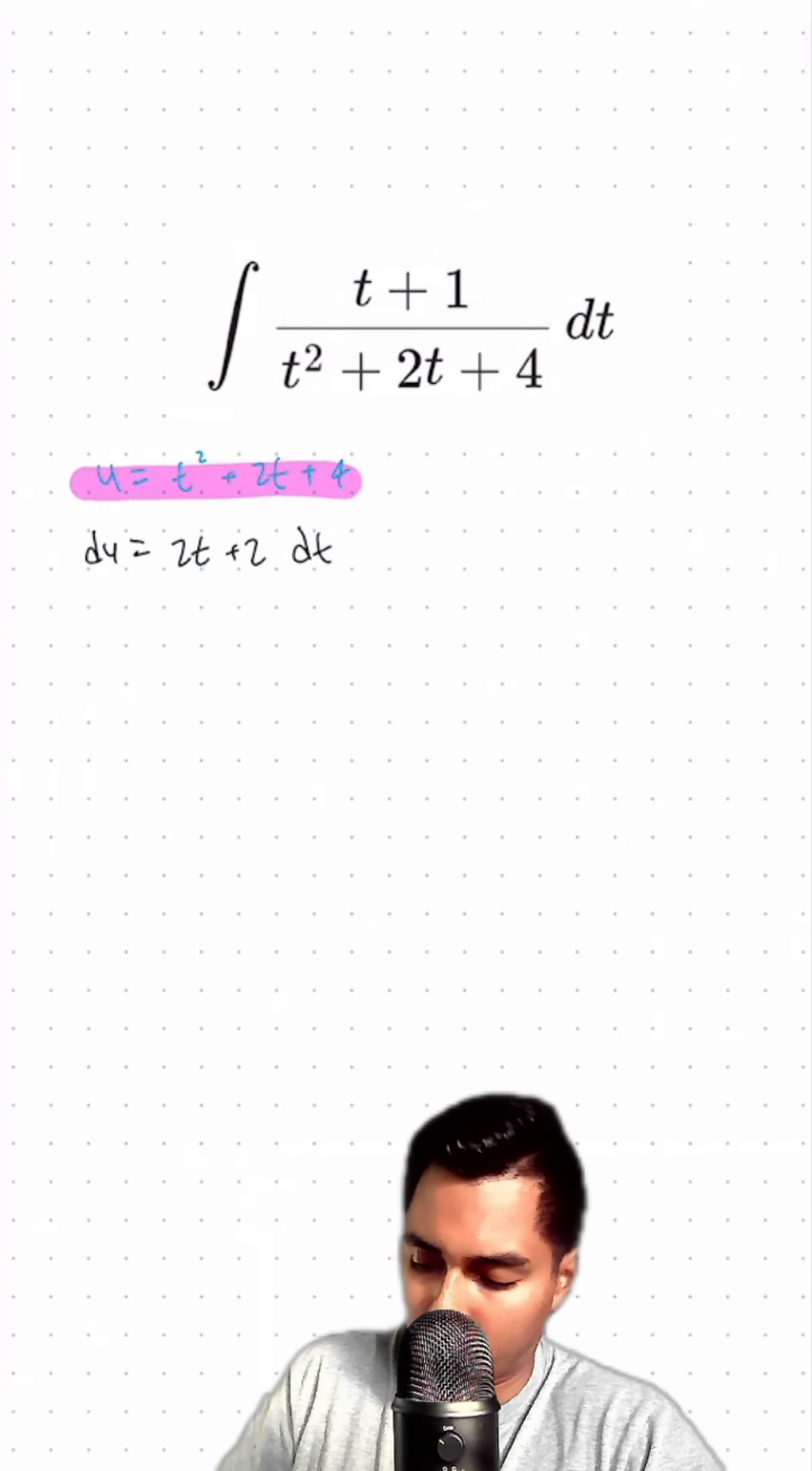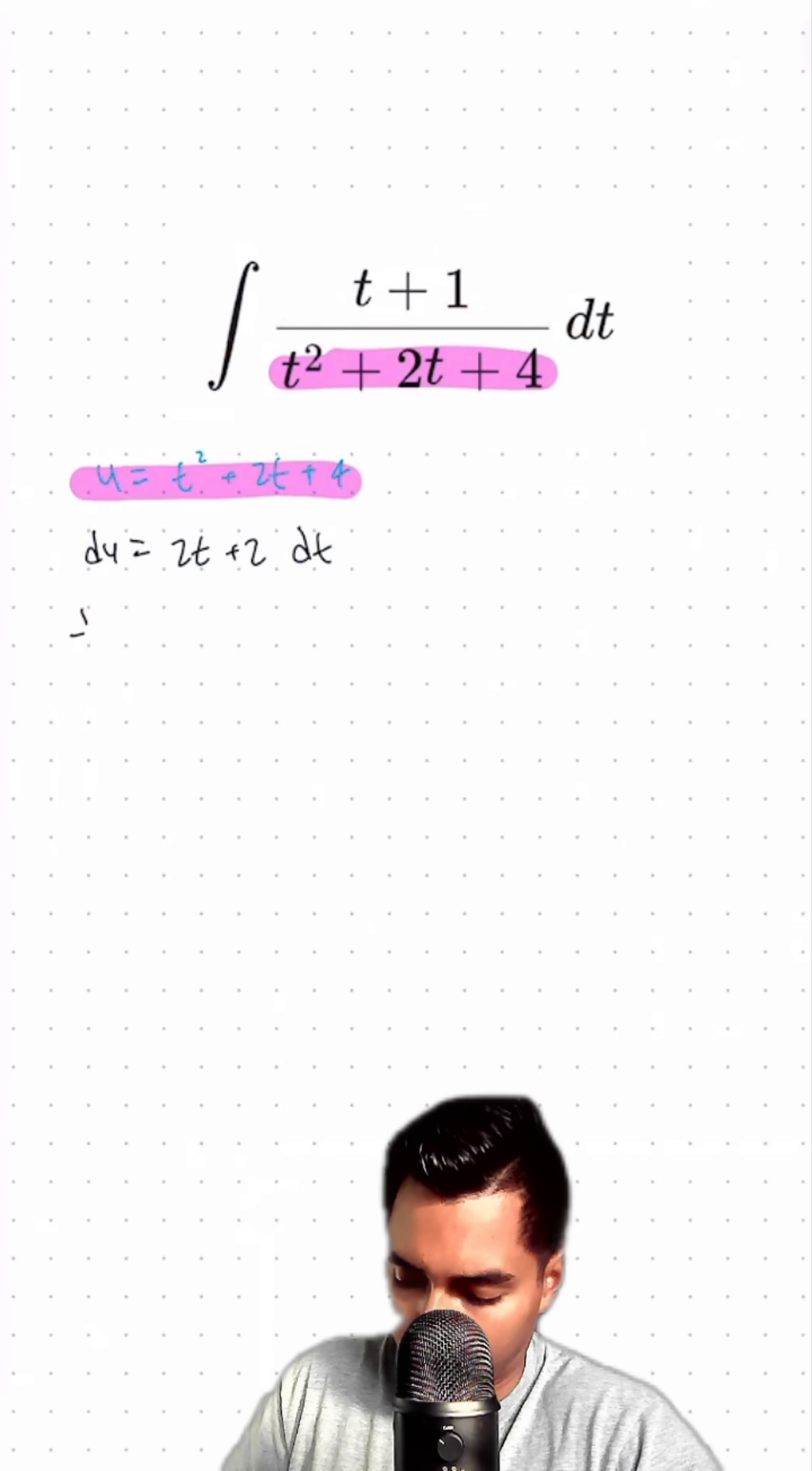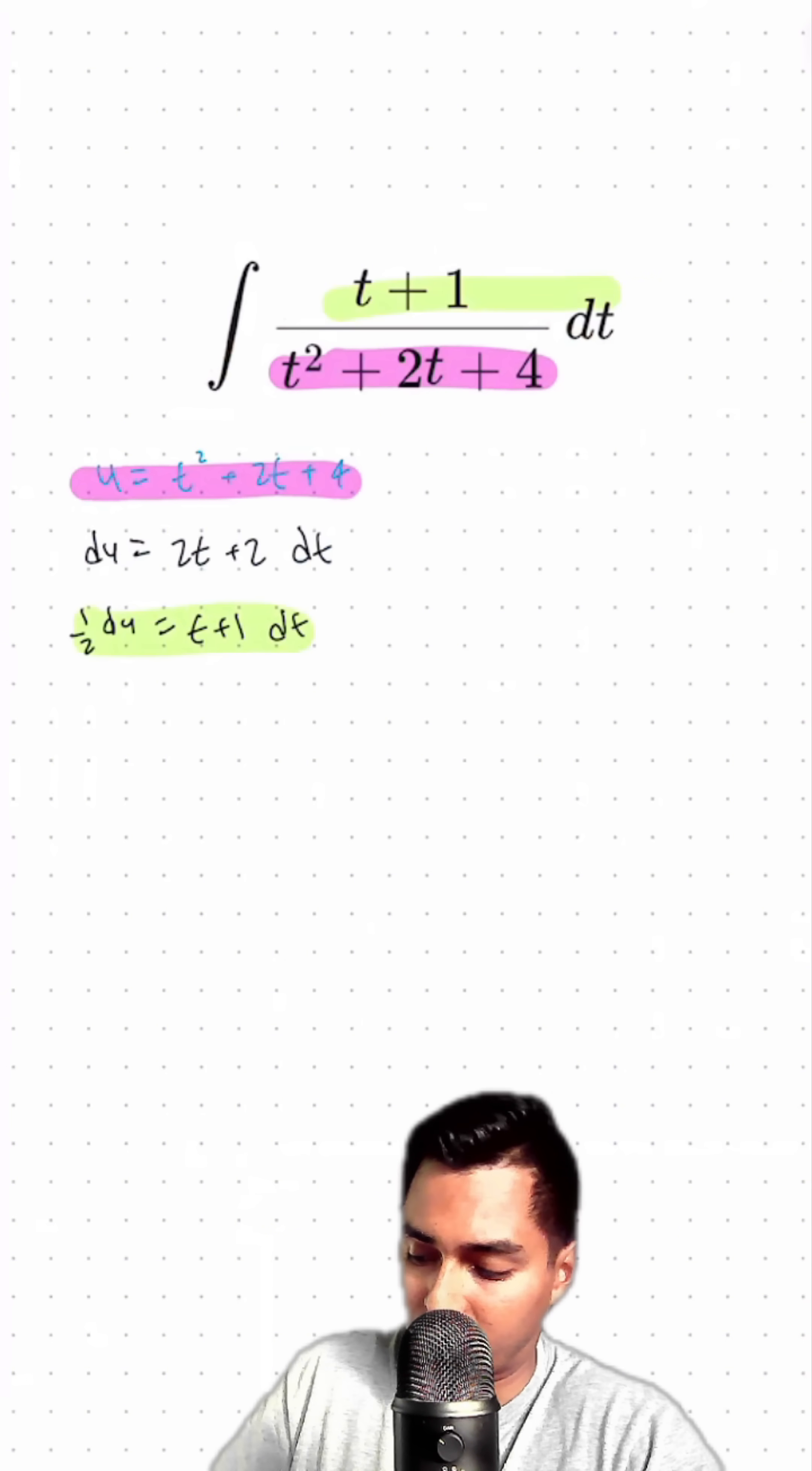And perfect. So our u is now in the denominator. But to get our du, I'm going to divide both sides by 2 to get t plus 1 dt, which is indeed the numerator there.